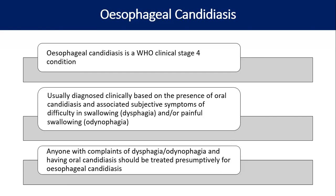Other causes that may mimic esophageal candidiasis include reflux esophagitis, esophageal ulcer, aphthous ulcer, herpes simplex virus ulcer, CMV, Kaposi's sarcoma, or tubercular ulcer — all can present with dysphagia or odynophagia. If treatment with antifungal fails to elicit a response within seven days, we need to think either of resistance to antifungal or an alternative diagnosis from those listed.